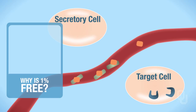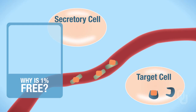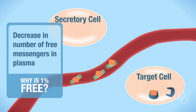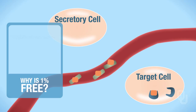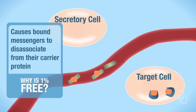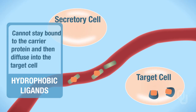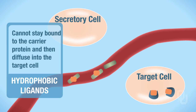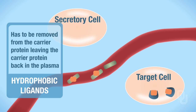The free messenger comes out of the blood and binds to the receptor within the target cell. Now that means we have fewer, or in other words, a decreased concentration of free messengers in the plasma. That then causes the bound messengers to dissociate from their carrier protein. So this is what stimulates those bound ligands to fall off, or to be removed from their carrier protein, and once they're removed, they can diffuse into the target cell. Your hydrophobic ligands cannot stay bound to the carrier protein and then diffuse into the target cell. Your ligand has to be removed from the carrier protein, leaving your carrier protein back in the plasma.